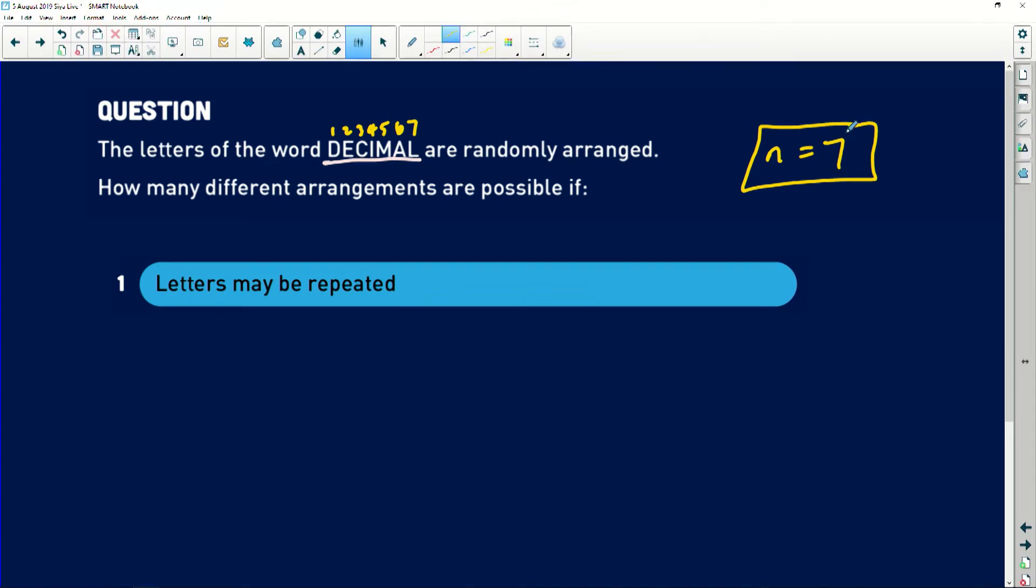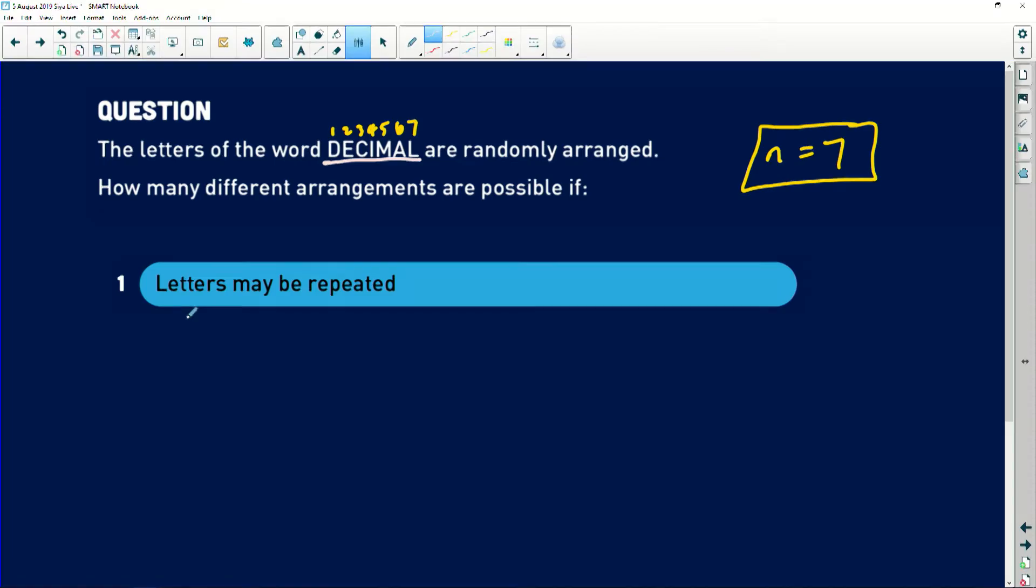And then how many different arrangements are possible if, remember what I said to you. There's two things that you need to make sure. You need to check whether there's repetition or there is no repetition. So that's what you first need to do before you can continue. So here they are saying, how many different arrangements are possible if alphabets or letters may be repeated?